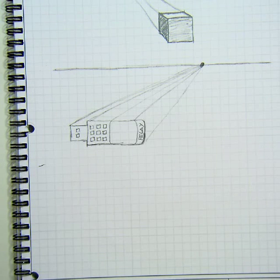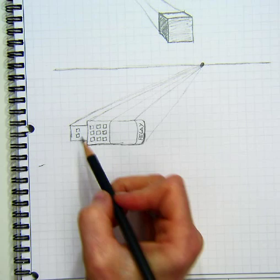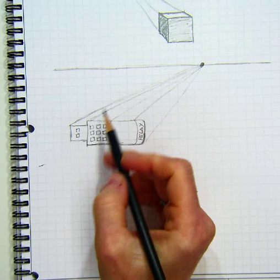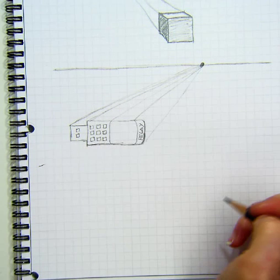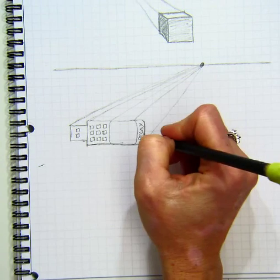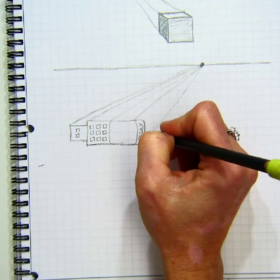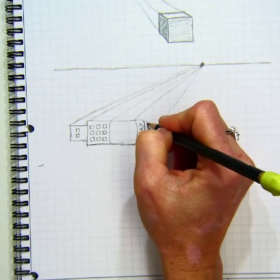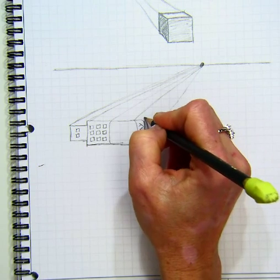And then we can begin, again, this one I'm not going to draw, because it would go through the object. These down here would go through the object. Now I have to decide the depth of my object. And so I'm going to go right through here.